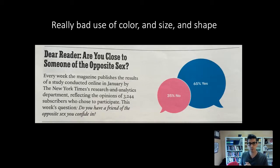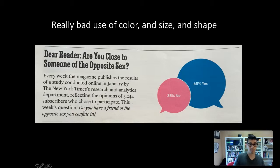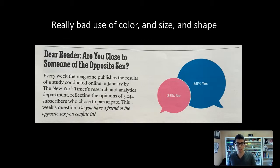What is an example where we can see all of these potential problems coming together? There are a lot of bad visualizations out there. This is an unfortunate visualization for several reasons. The example: 'Are you close to someone of the opposite sex?' Every week the magazine publishes results of a study conducted online in January by the New York Times' research and analytics department, reflecting the opinions of 3,244 subscribers who chose to participate. This week's question: do you have a friend of the opposite sex you could confide in? They visualize the yeses and nos with different bubbles, and because the question is about gender, they're using pink and blue.